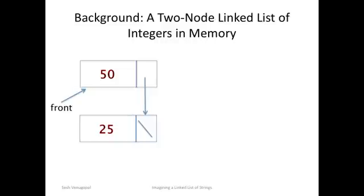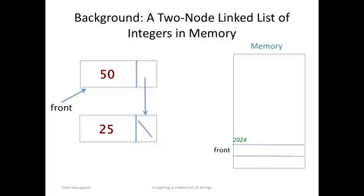In order of traversal through the linked list we first have the variable front at address 2024. This variable holds the address of the 50 node which is at address 1984 in memory.